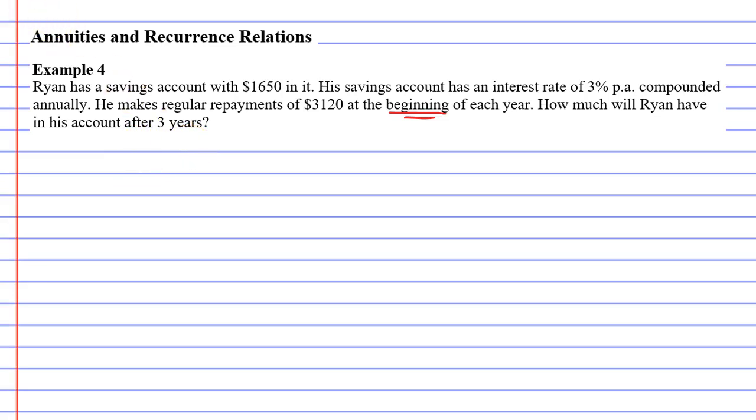So what we'll do is we'll start with our interest rate which is 3% per annum and it's compounded annually which makes our calculations a little easier.